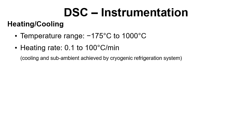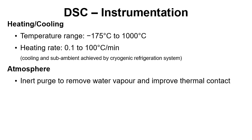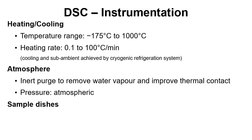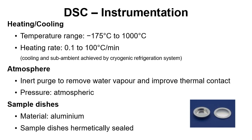For sub-ambient temperatures a cryogenic refrigeration system is required. In terms of atmosphere, an inert gas can flow through to remove water vapour and to improve thermal contact, and the instrument is typically run under atmospheric pressure. Sample dishes are normally made of aluminium and are hermetically sealed — a base and a lid are crimped together once the sample or reference is inside. The lid can also be pierced if it needs to be open to the atmosphere.